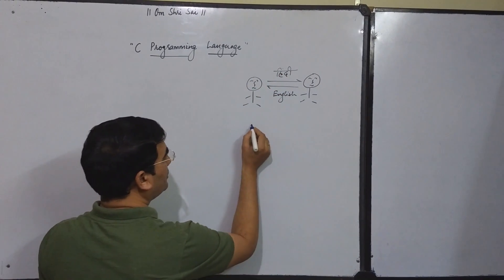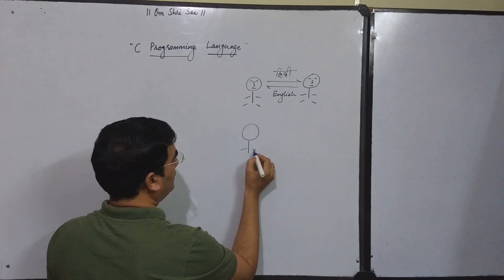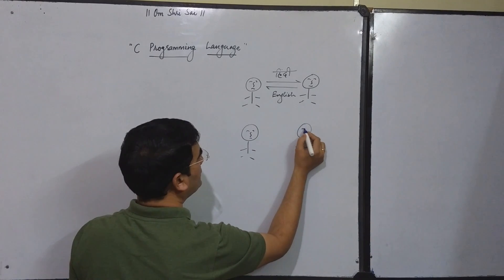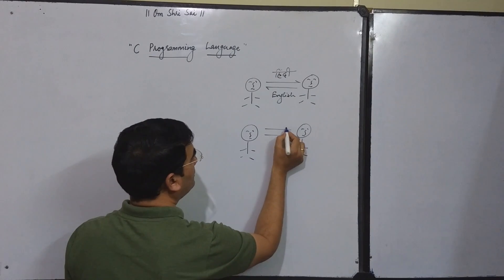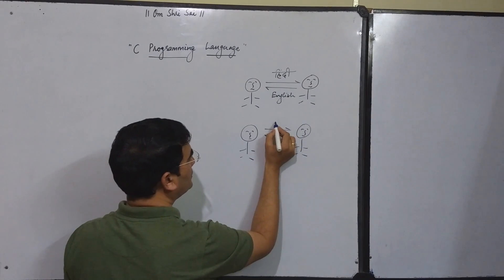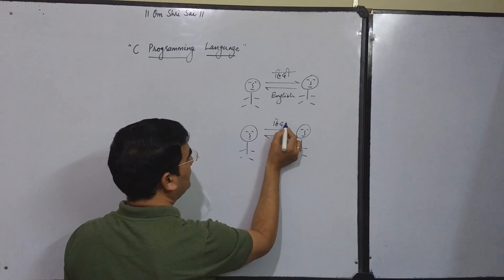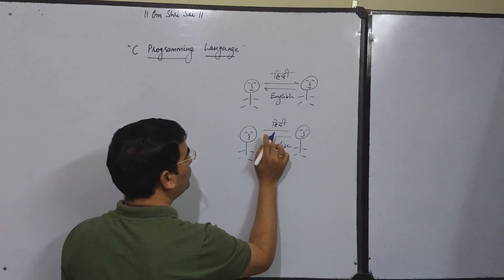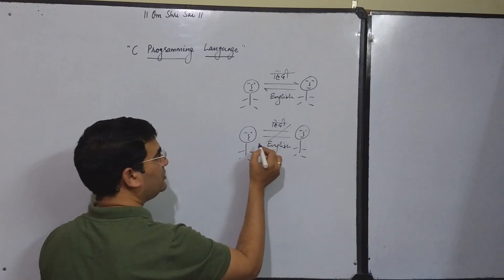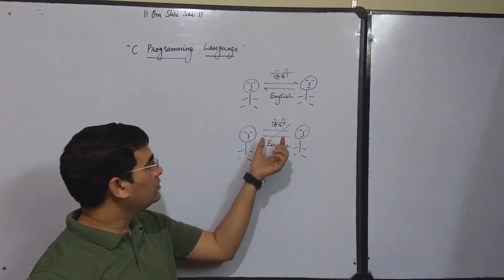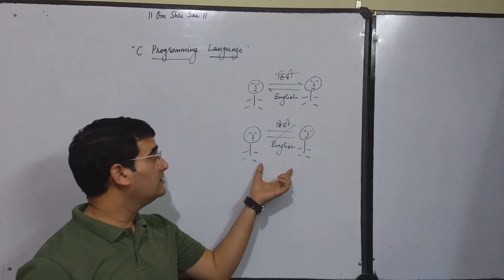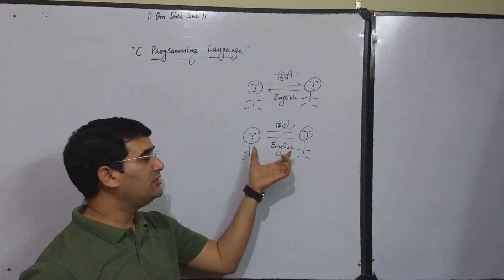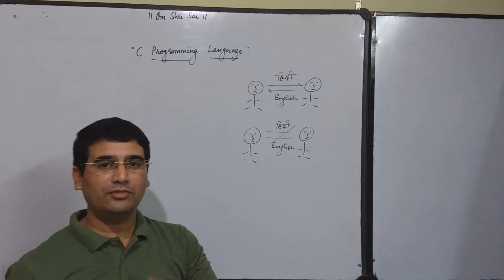Take another example: when there are two persons but they do not know any common language. For example, one person knows Hindi and another knows English. Then there will be no possibility to establish communication because there is no common language. So again, a language is just a means of communication, and to establish communication between two sides, we require at least a common language.